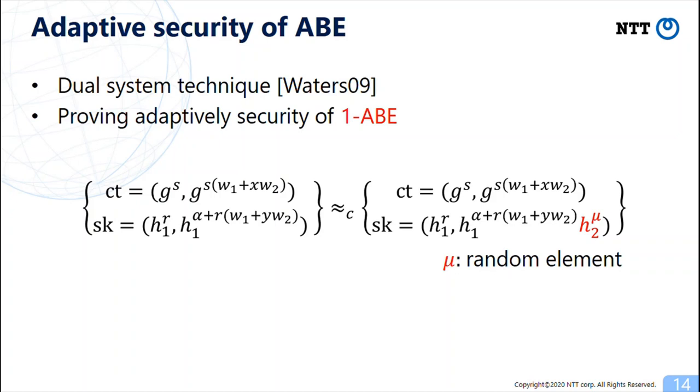The example of this slide is the case of Boneh-Boyen IBE in composite order bilinear groups. The security of 1-ABE implies that a normal key as shown in the left-hand side and a semi-functional key as shown in the right-hand side are indistinguishable even given the ciphertext.